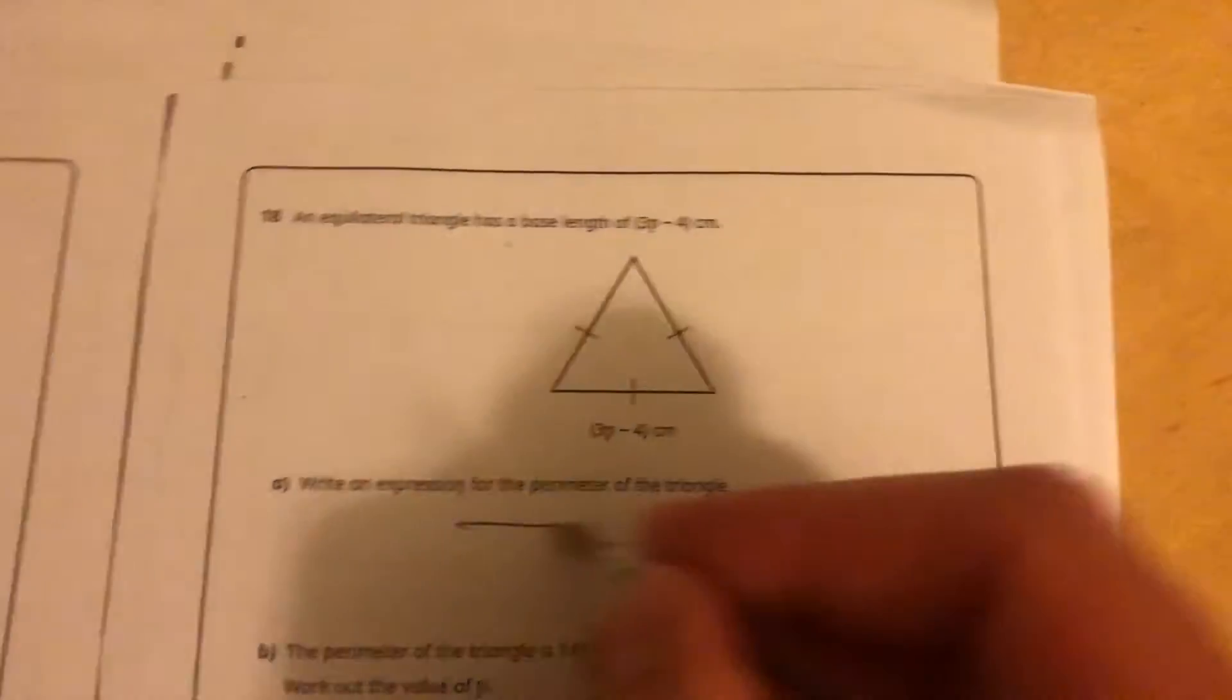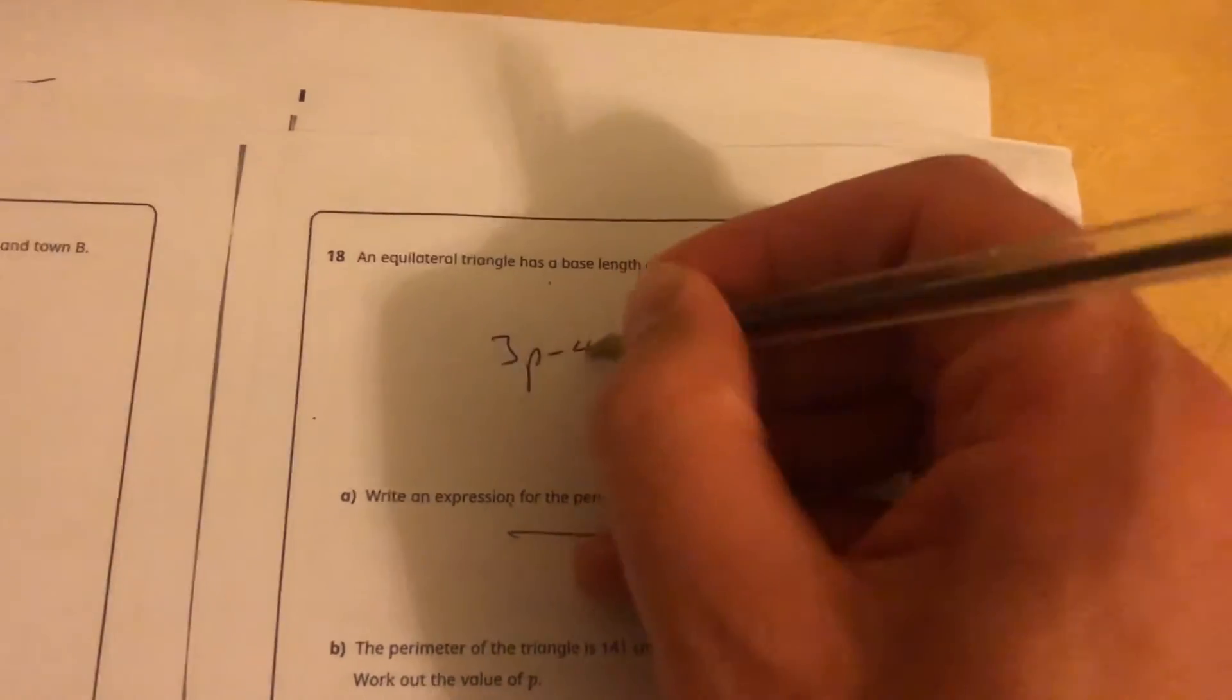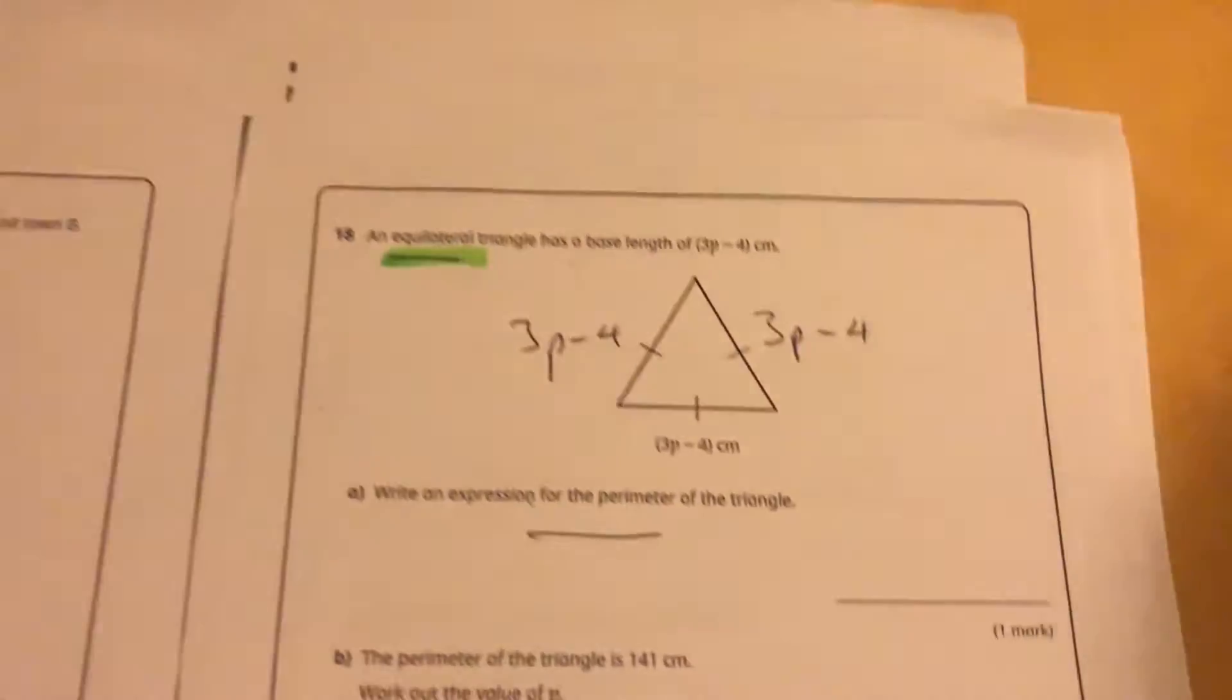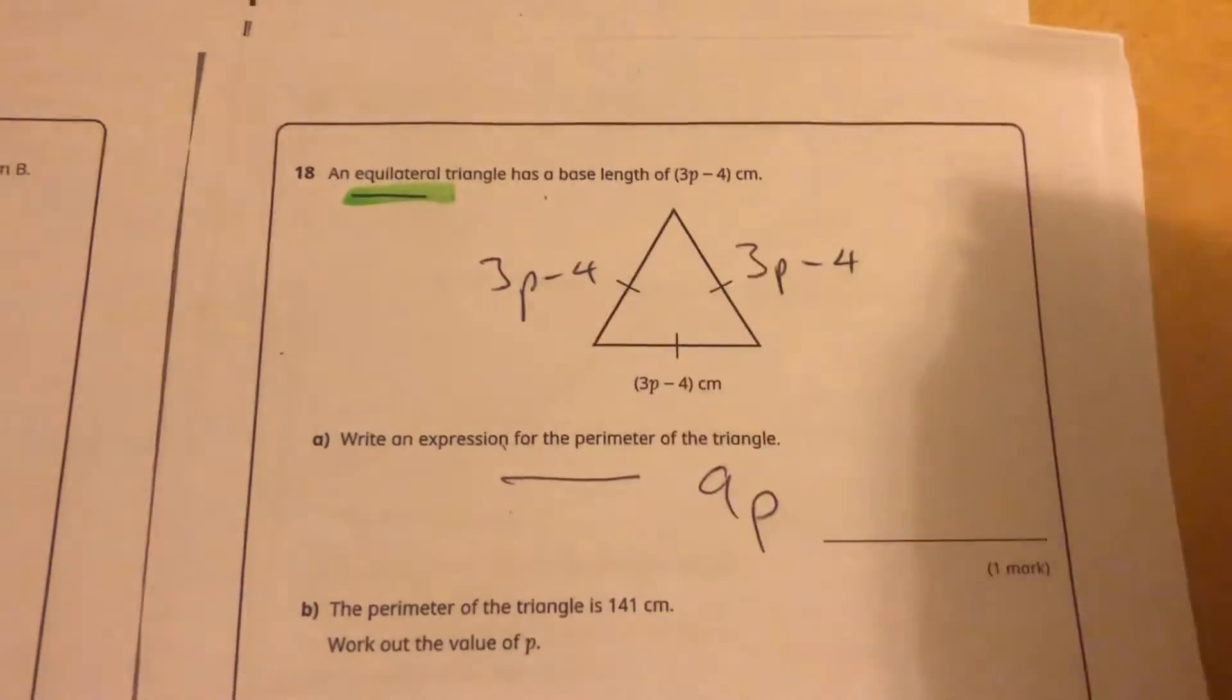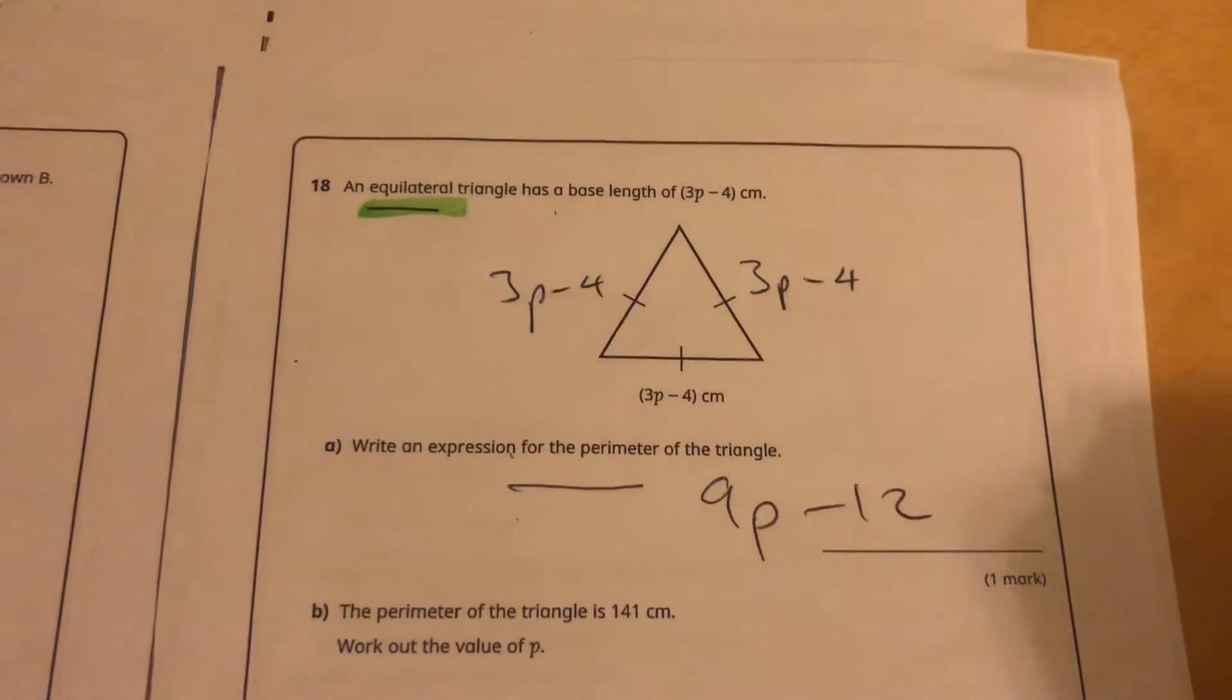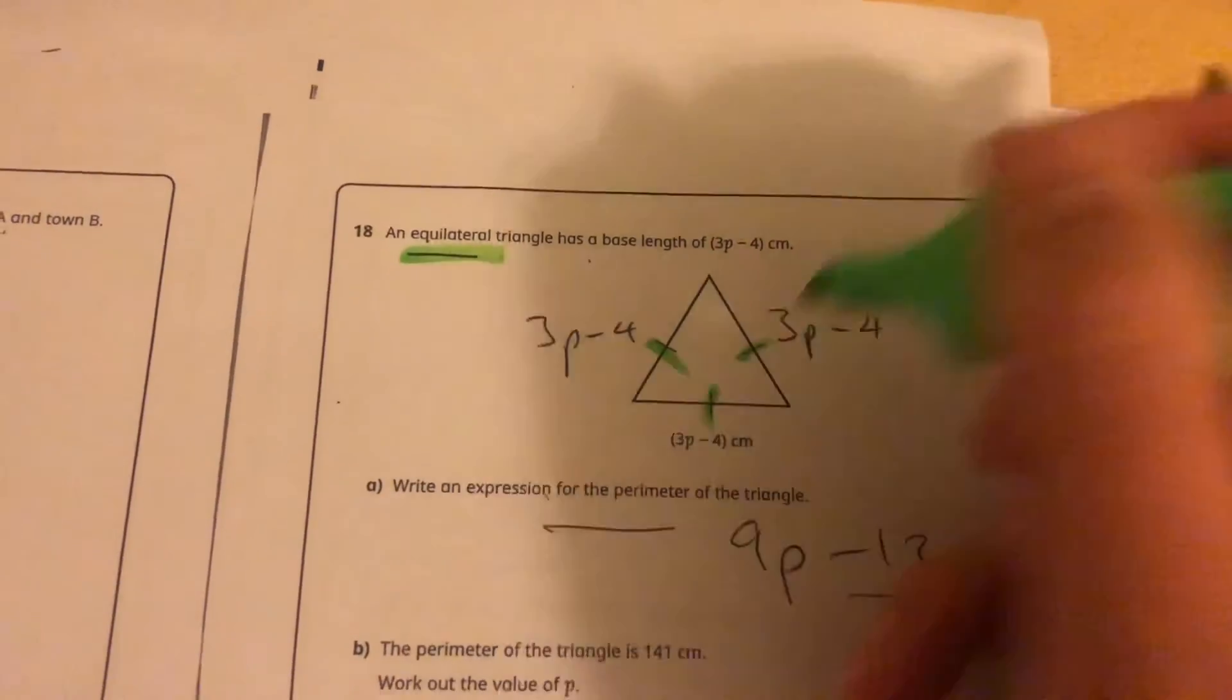Maybe this one, an expression for a perimeter. They're all going to be 3P minus 4 because it's an equilateral triangle. An equilateral triangle has all sides the same. So it's only one mark. 3P, 3P, 3P is 9P, minus 4, minus 4, minus 4 is minus 12, equals 9P minus 12. Because that dash there means all of those are the same.